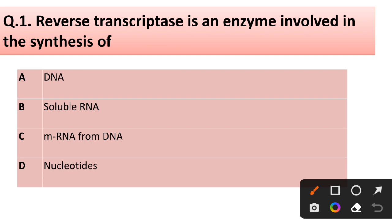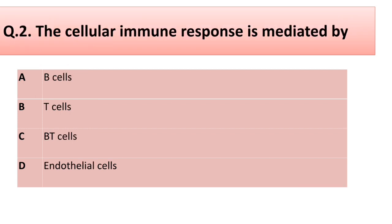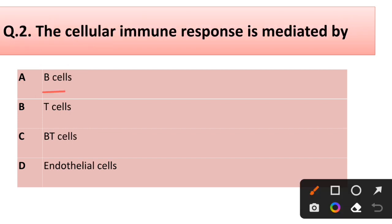Question number one: Reverse transcriptase is an enzyme involved in the synthesis of — DNA, soluble RNA, mRNA, or DNA nucleotides? Correct answer is option A: DNA. Question number two: The cellular immune response is mediated by — B-cell, T-cell, BT-cell, or endothelial cell? Correct answer is option A: B-cell.